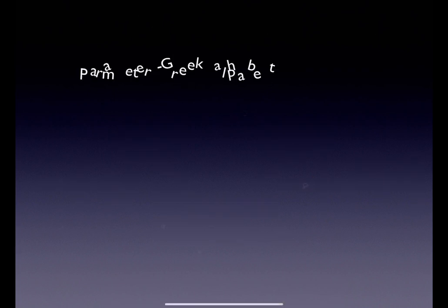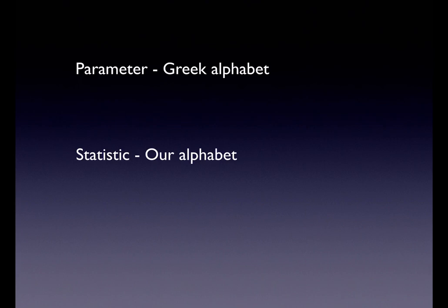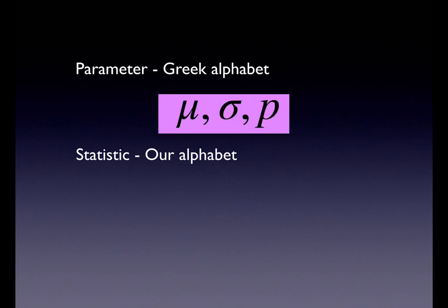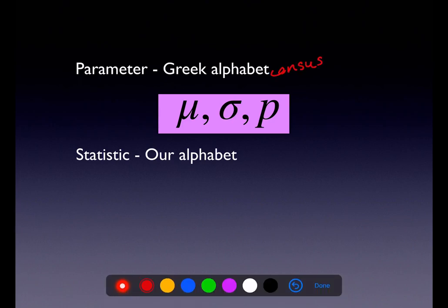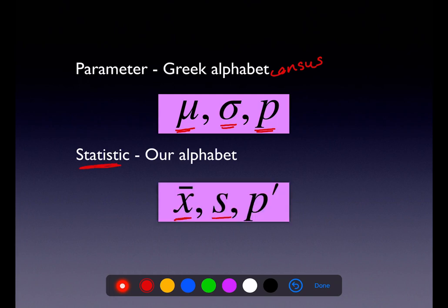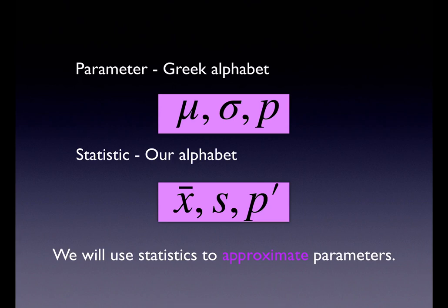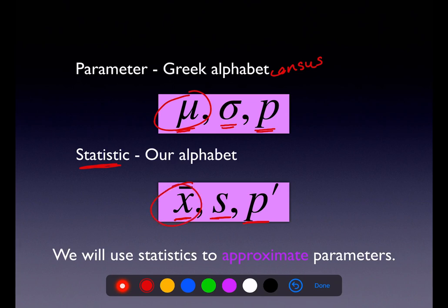If you're wondering what a confidence interval is, let's go back to Chapter 1 where we talked about populations versus samples, and the numbers we get are parameters or statistics. A parameter is hard to find — the only way to actually find one is to run a census. We have population mean mu, population standard deviation sigma, and population proportion p. Those are very difficult to find. So instead, we find statistics — sample mean, sample standard deviation, sample proportion — and use those to approximate parameters. We take x-bar, add and subtract a margin of error on either side, to get a confidence interval — just an estimation of a parameter.